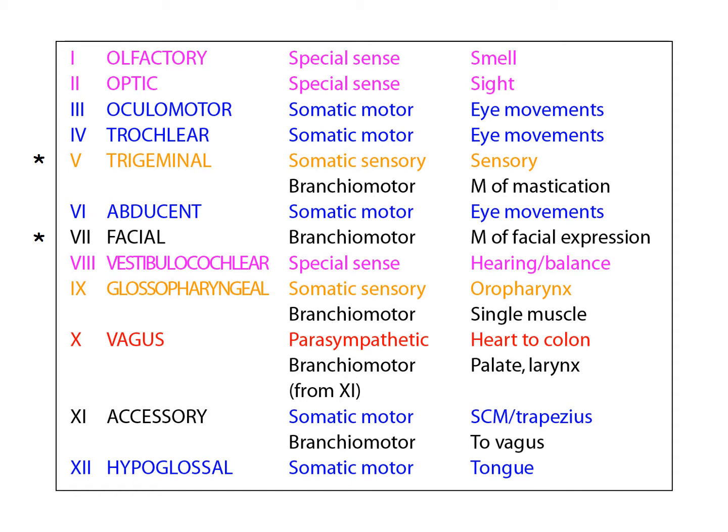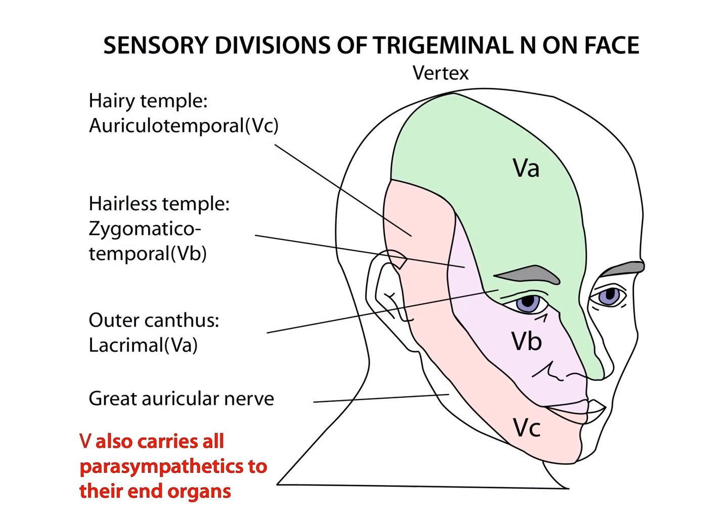We're now going to look in more detail at the trigeminal nerve and the facial nerve. Starting with the trigeminal nerve, we look at the distribution of its sensory fibres on the face. An easy way to remember the meeting point of the three main branches on the lateral side of the head: the outer canthus of the eye is supplied by the lacrimal nerve, a branch of the ophthalmic division; just posterior is the hairless temple supplied by the zygomaticotemporal nerve, a branch of the maxillary division; and then the hairy temple, supplied by the auriculotemporal nerve, a branch of the mandibular division.